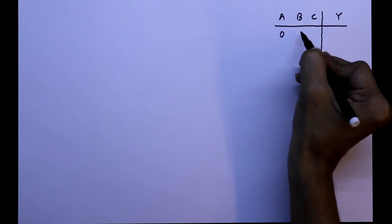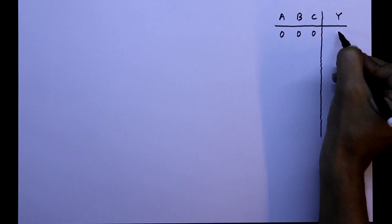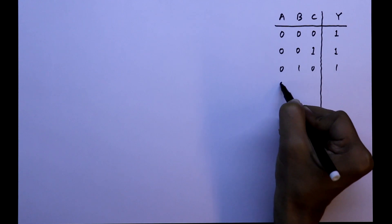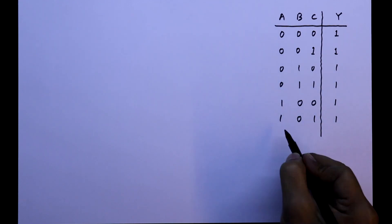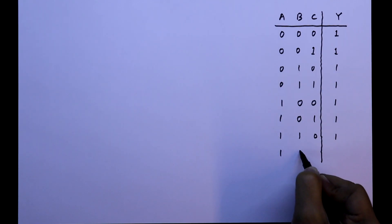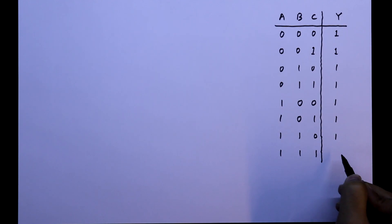When the inputs are 0 0 0, this will be 1. When all the 3 inputs are 1, then only we will get 0 as an output.